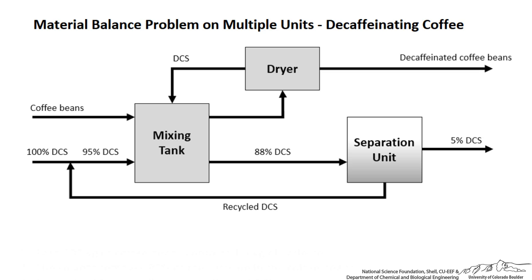In this screencast we will work through a material balance problem that involves a mixing point and a recycle stream. We'll use a degree of freedom analysis to determine where to start and set up our strategy to solve, since we have multiple units and we may or may not be able to actually solve this problem.